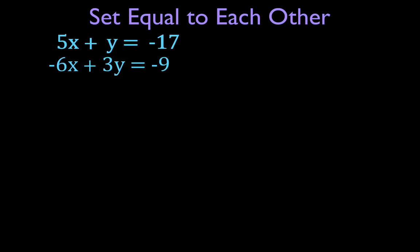This is solving systems of linear equations by setting them equal to each other. What we're really doing is finding, when we solve these two linear equations — because this is the equation for a line, and this is the equation for a line — the single pair of x and y values that is a solution to both equations. And because these are equations of lines, it is also the point on the x-y coordinate system where these two lines intersect each other.